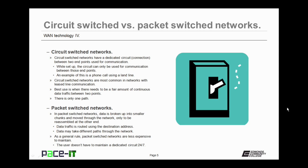Circuit-switched networks are most common in networks with leased-line communication channels. They're best used when there needs to be a fair amount of continuous data traffic between the two endpoints. With circuit-switched networks, there is only one path for the data to take.